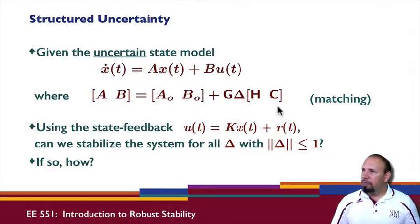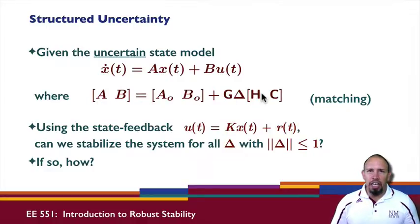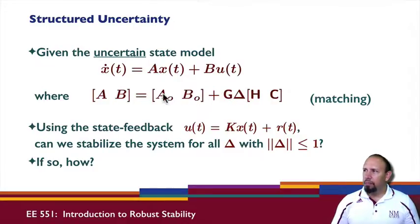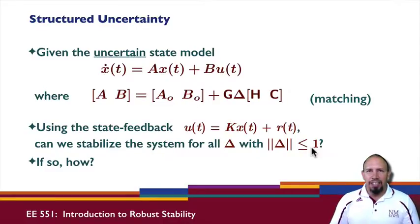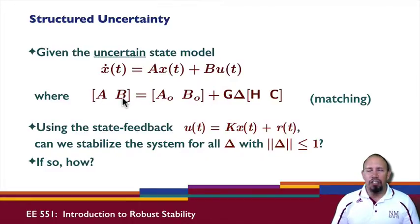Given the uncertain model where A equals A-naught plus G·delta·H and B equals B-naught plus G·delta·C, the uncertainty enters the same way into both A and B matrices — this is called the matching condition. Using state feedback u equals Kx plus r, can we stabilize the system for all delta with magnitude less than or equal to one? Clearly a stabilizability condition is needed, and it's complicated because not just A but also B is uncertain.